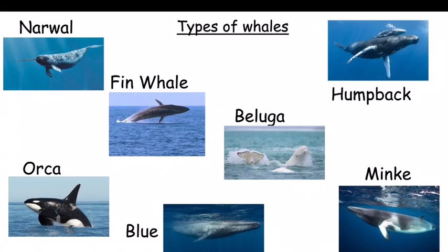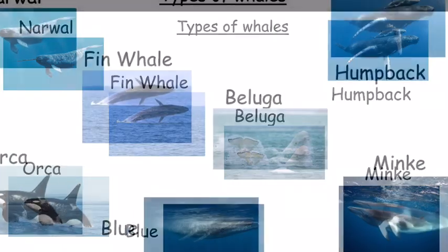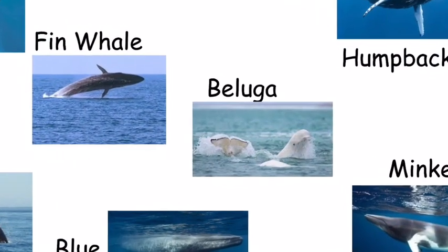How did you get on? Here are some different kinds of whale: the humpback, the minke, beluga, fin whale, narwhal and orca. And the one I'm going to use as my example is the beluga whale.